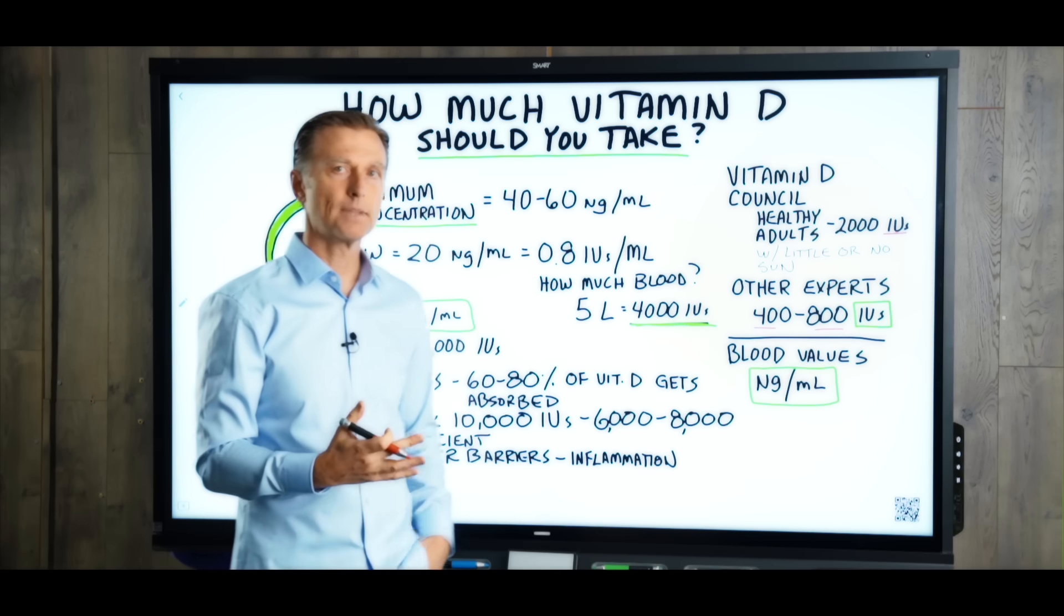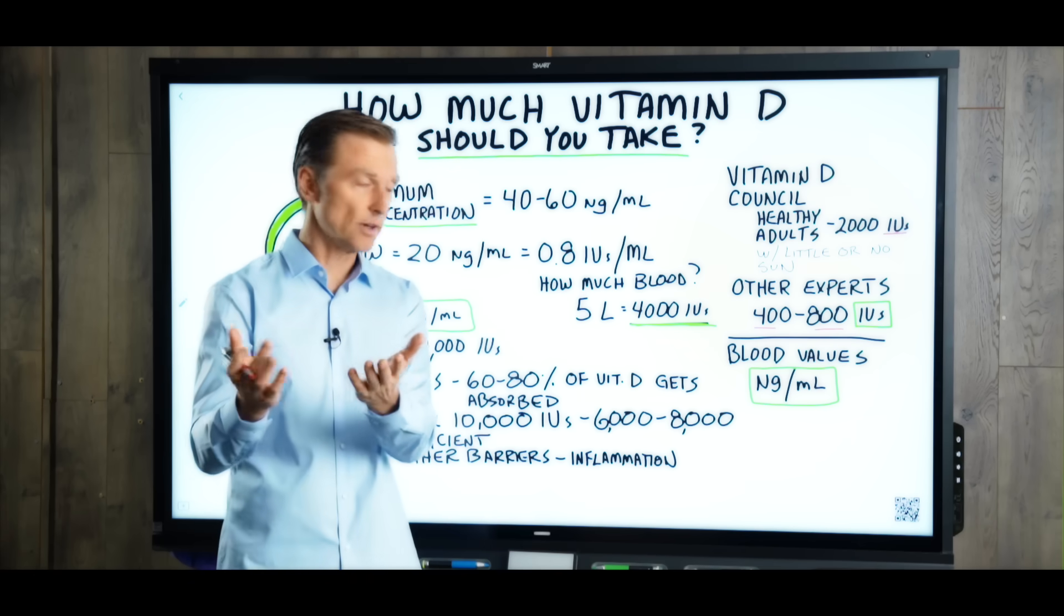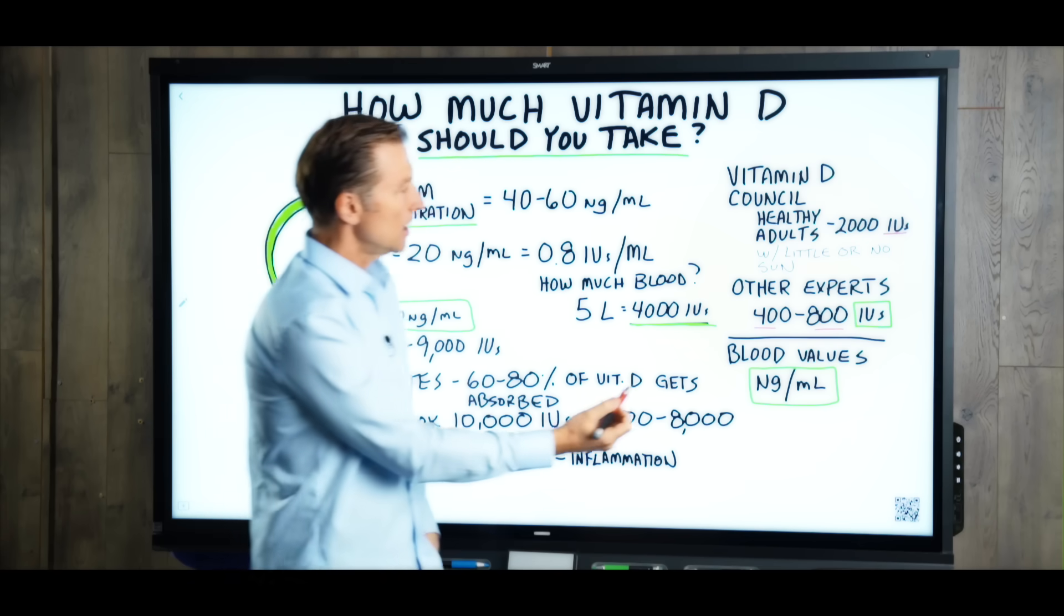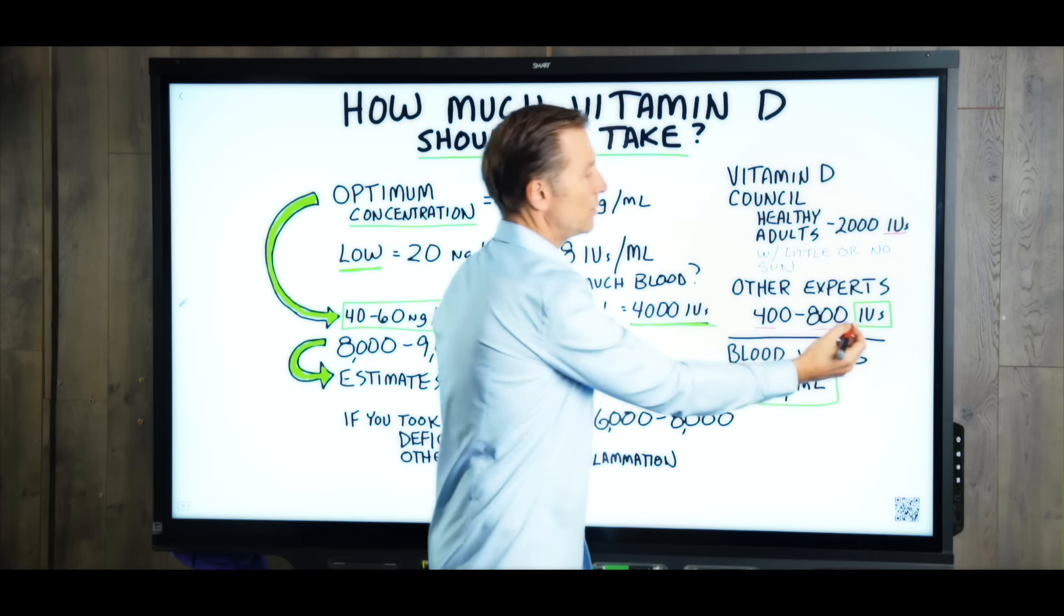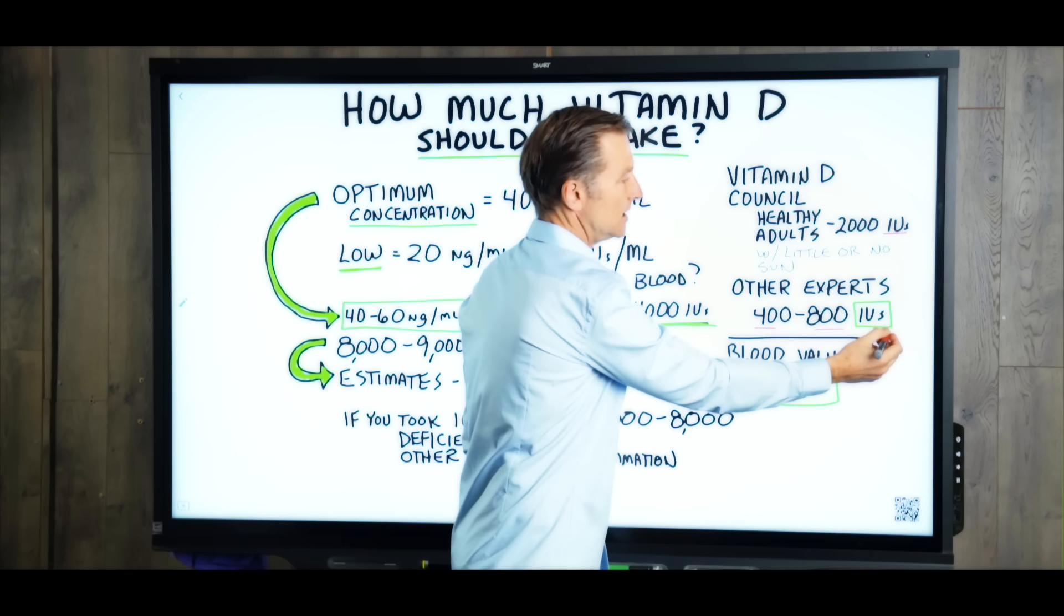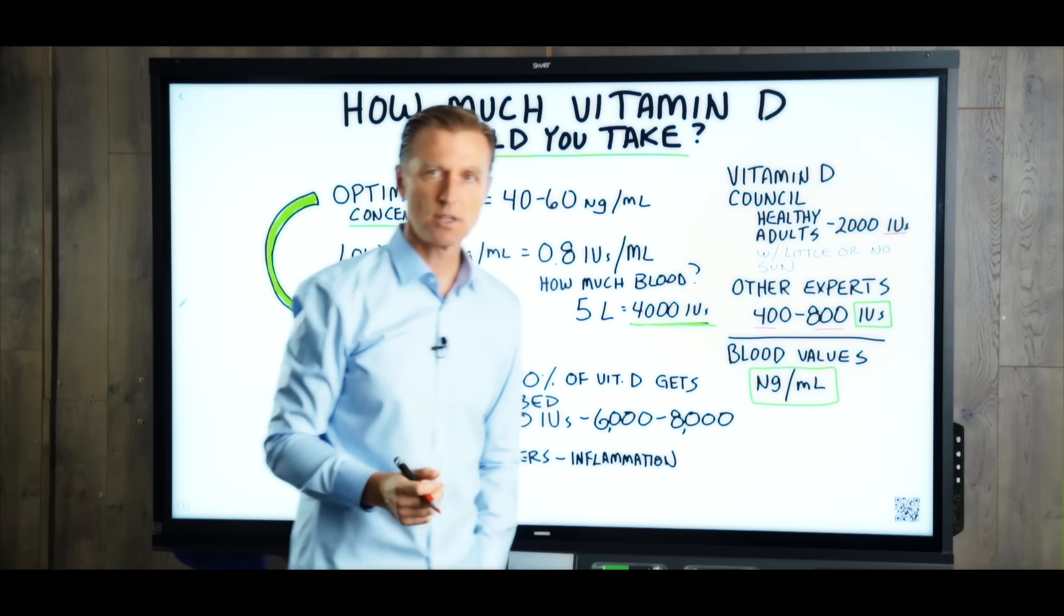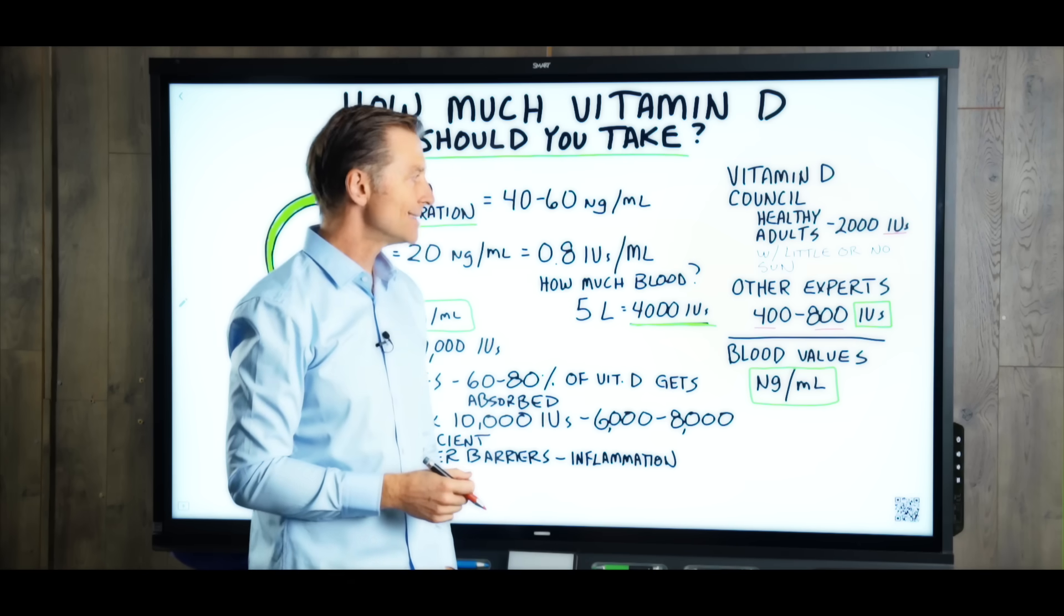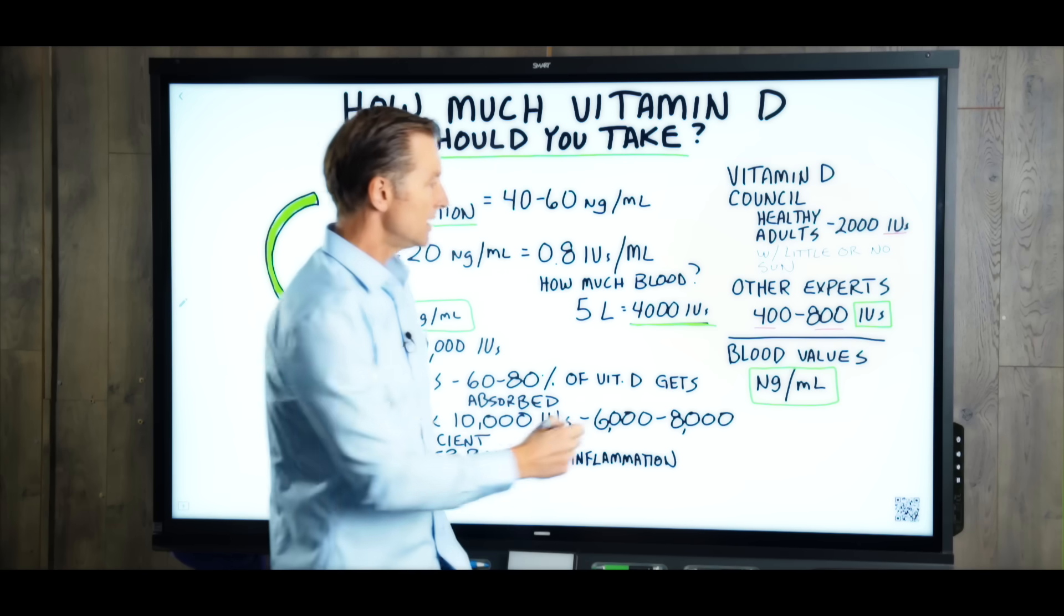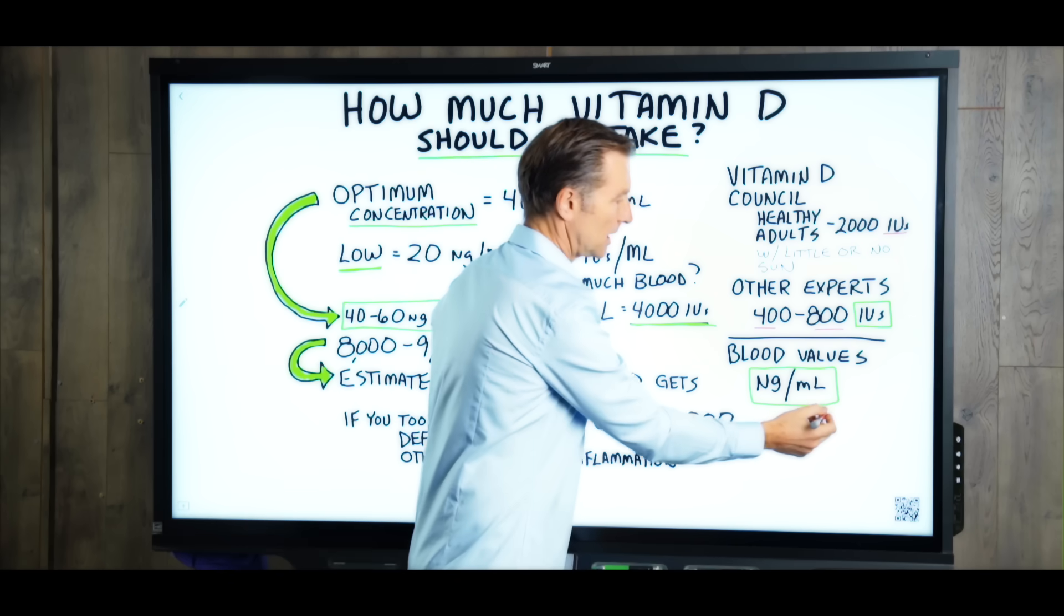Now, here's the problem that I need your help with. I just don't understand this. When we take vitamin D, it's in these units right here, international units, but when they measure the blood, it's not in international units. It's in NGs per milliliter.